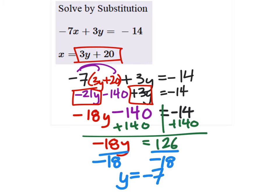So in my answer, which will be a point on a graph, we have the y value, which is negative 7.